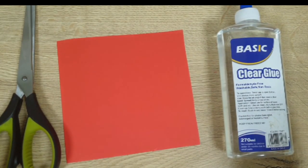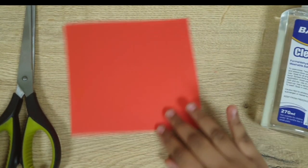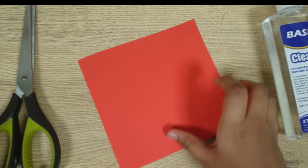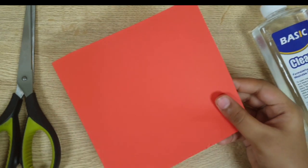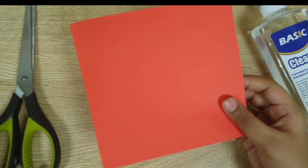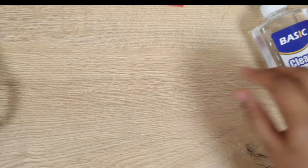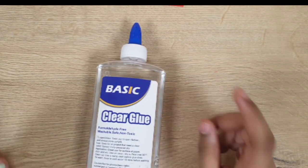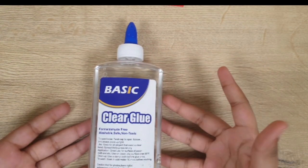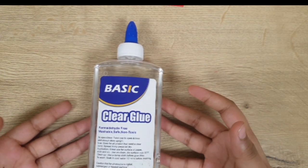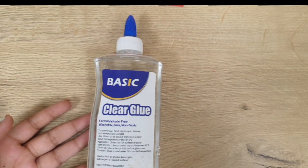So for making our rose, we need a square paper of a red color or any color which you want to make your rose with. Then you need scissors, then you need some glue. I would suggest Fevicol, but you can take any glue which you have. So let's see how to make it.